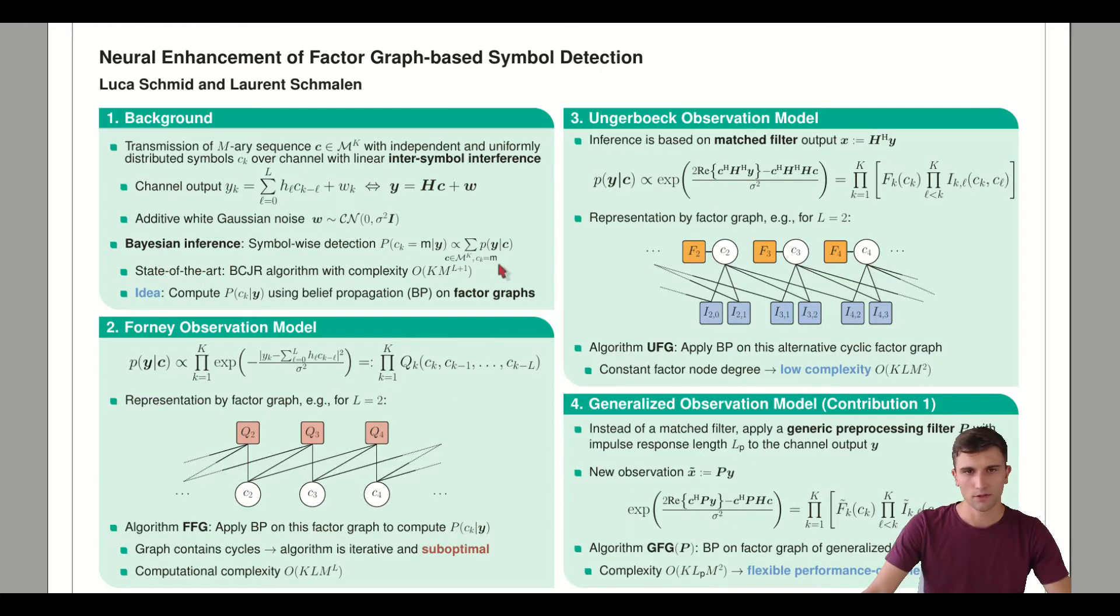The most straightforward way is the Forney observation model, which basically uses the Markovian property of our channel. This factorization is given in exponential terms, the density of our normal distribution. Here you can see the interfering symbols C weighted with the channel impulse response H.